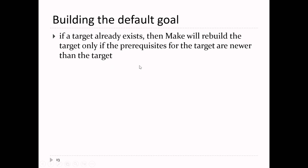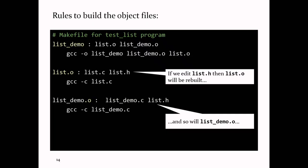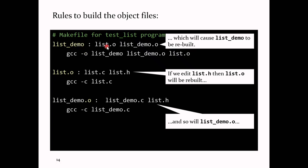Here's the makefile for list_demo. If you edit list.h, list.o gets rebuilt. Since list.h is also a prerequisite for list_demo.o, that gets rebuilt too. And since list_demo depends on both those files, list_demo also gets rebuilt. Make ensures all dependencies get built in the appropriate order.